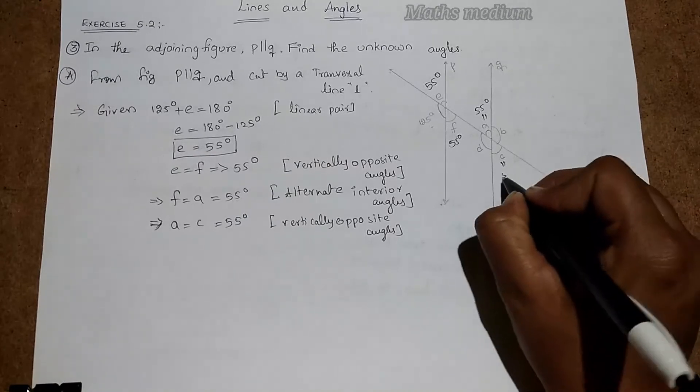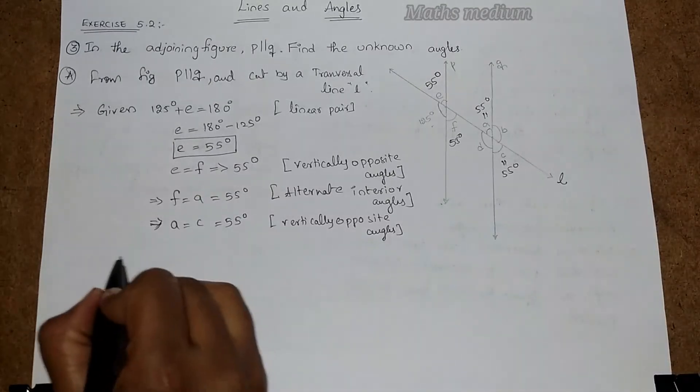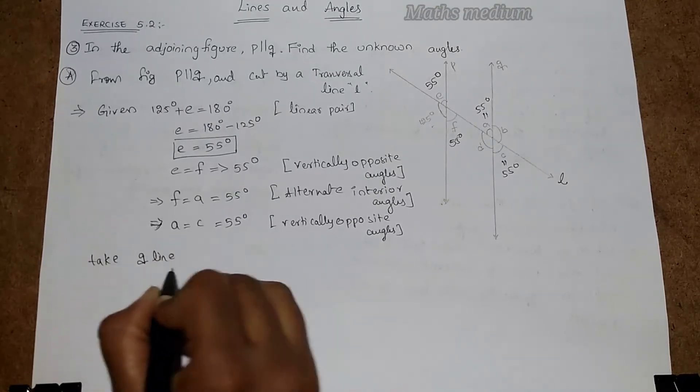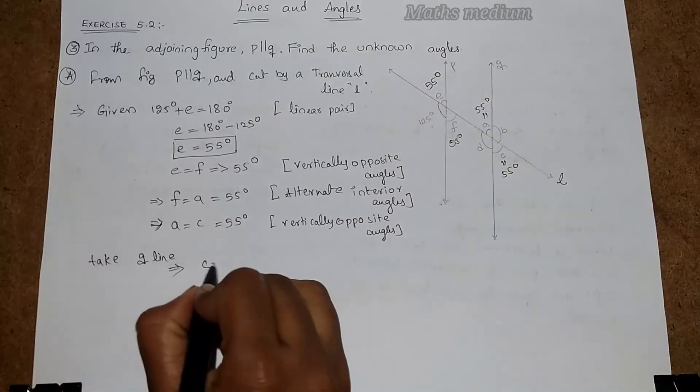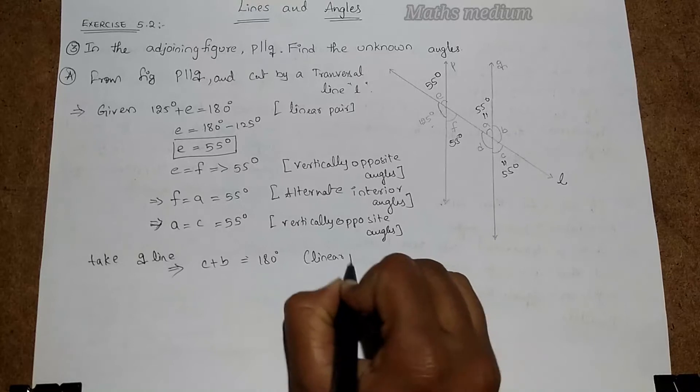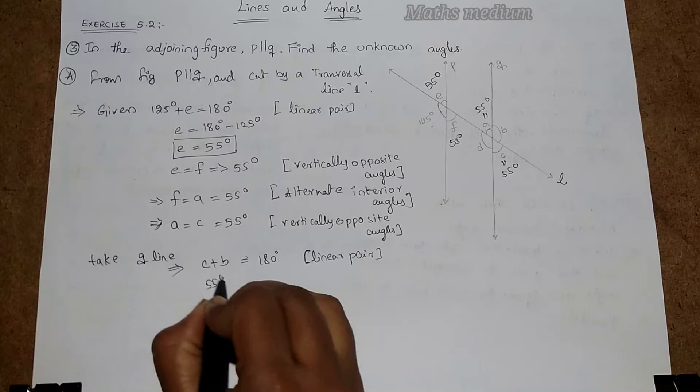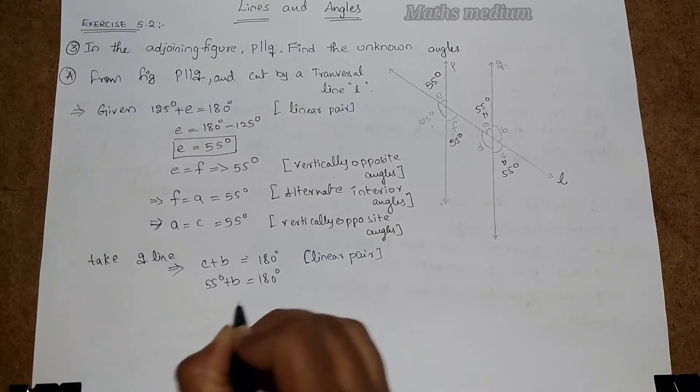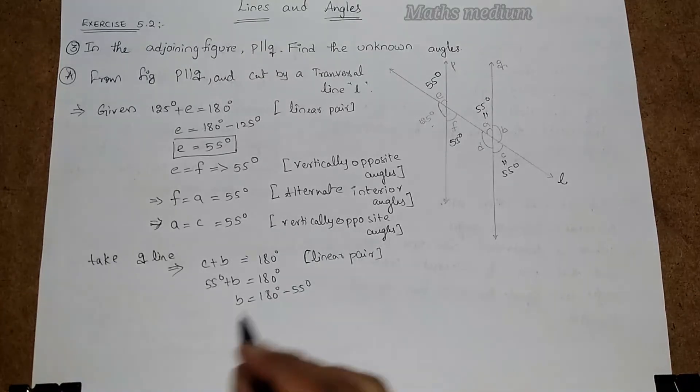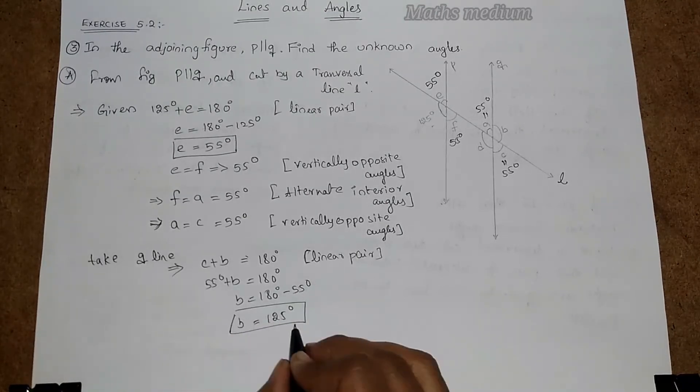From that we can say 55 degrees. Now I am taking this line, that is Q line. So from that C plus B is equal to 180 degrees, linear pair. In linear pair we know that 180 degrees, C equal to 55 degrees plus B is equal to 180 degrees. So B is equal to 180 degrees minus 55 degrees, so we get B equal to 125 degrees.